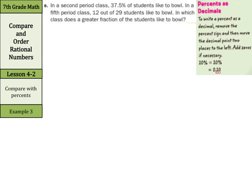In the second period class, 37.5% of students like to bowl. In the fifth period class, 12 out of 29 students like to bowl. In which class does a greater fraction of the students like to bowl? So let's set this up with our second period at 37.5% and our fifth period is 12 out of 29. One thing I can do here in order to compare is to get both numbers as a decimal.